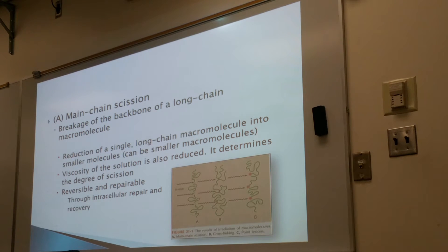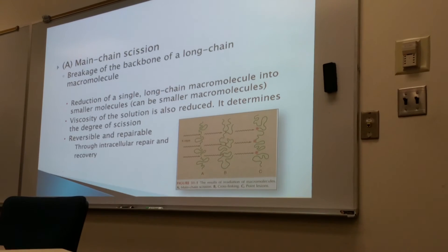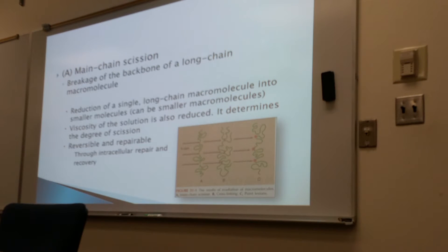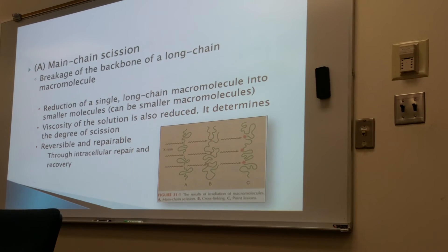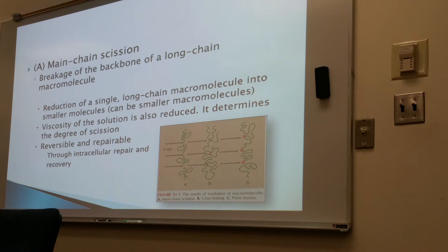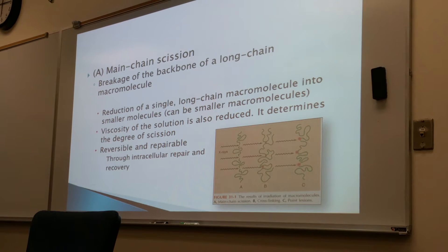The damage to these molecules can be studied by examining the viscosity of the solution. During main chain scission, there is a reduction or decrease in viscosity. Viscosity is the overall thickness of a solution — something very viscous would be like oil or syrup; something less viscous would be like water. If there is main chain scission damage, there is decreased viscosity. These cells can also fix themselves through intracellular repair and recovery if we can stop the damage prior to replication.